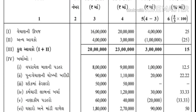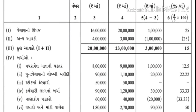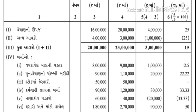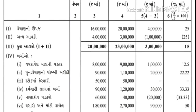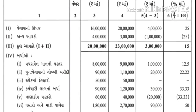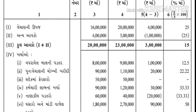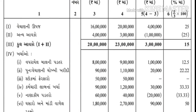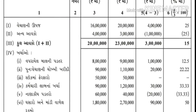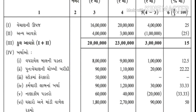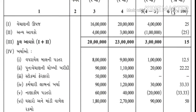કુલ આવકો - 2016ની અંદર 20 લાખ, 2017ની અંદર 23 લાખ. ત્યારબાદ ખર્ચ - 'ખર્ચ' હેડિંગ - એ બધા ખર્ચ - પહેલા - બધા ત્યાં લખી નાખવાના - રકમ ત્યાં ખાલી.